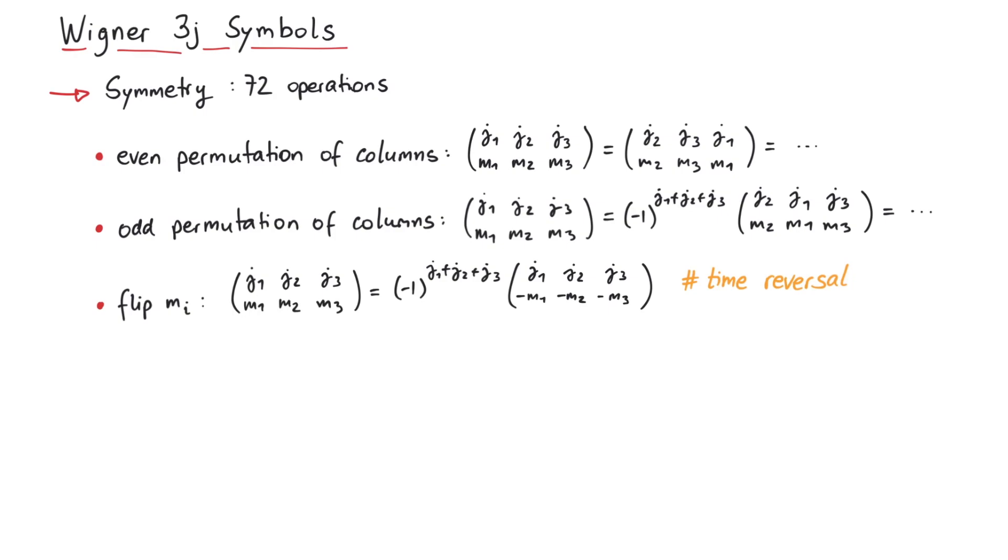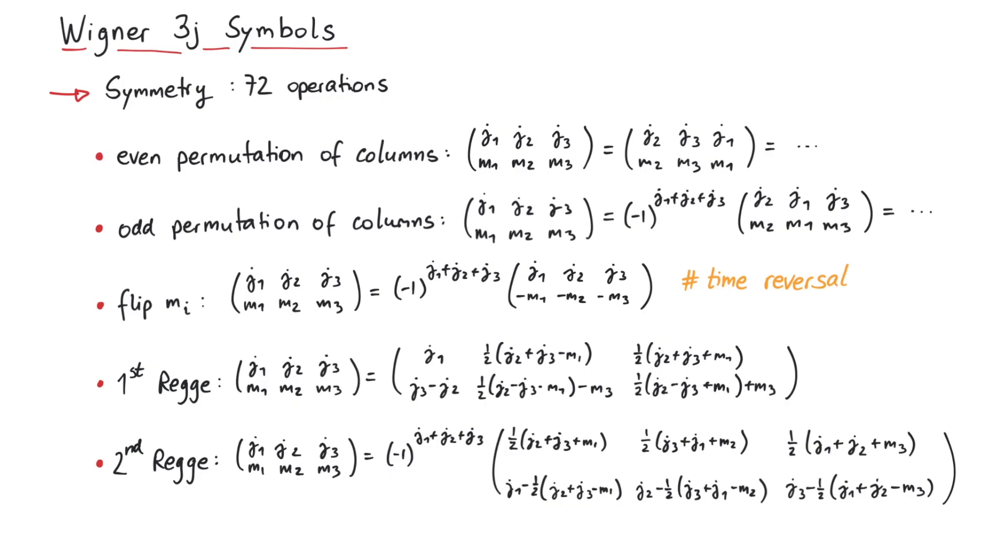Furthermore, there are two so-called Regge symmetries, which are a bit more complicated, and look like this. So how do we know that those are exactly 72 symmetry operations? Well, showing this takes some time, but it's worth it.